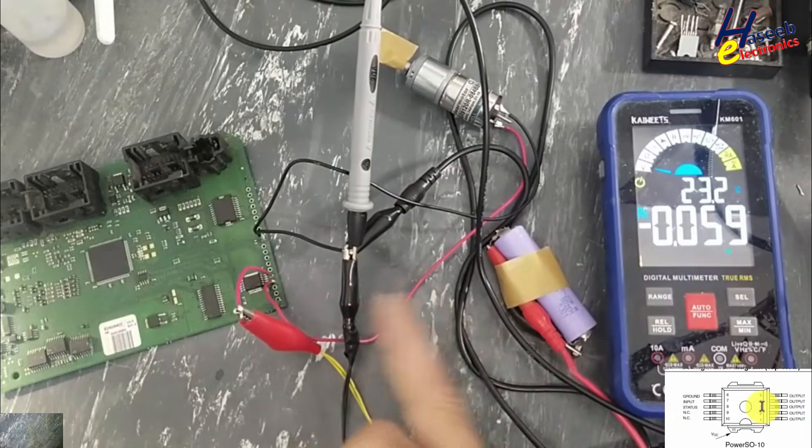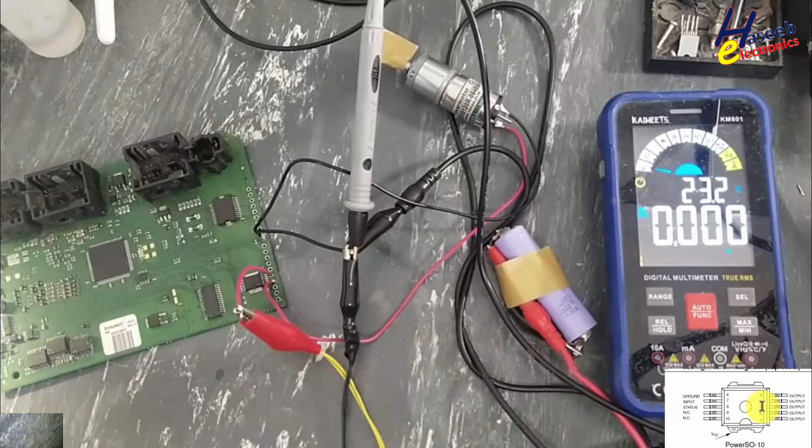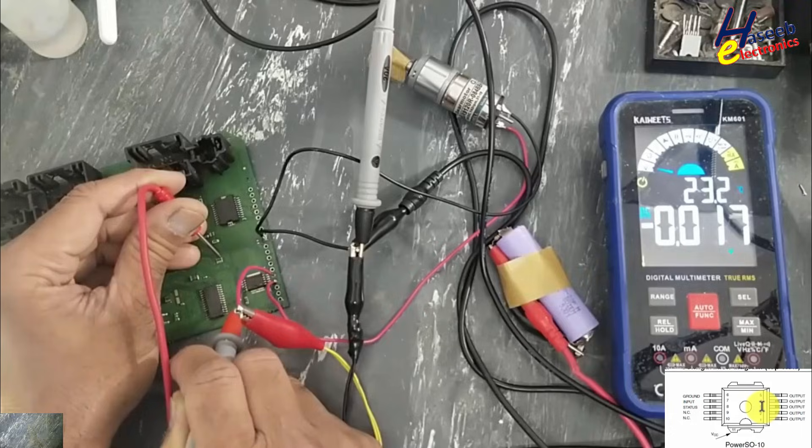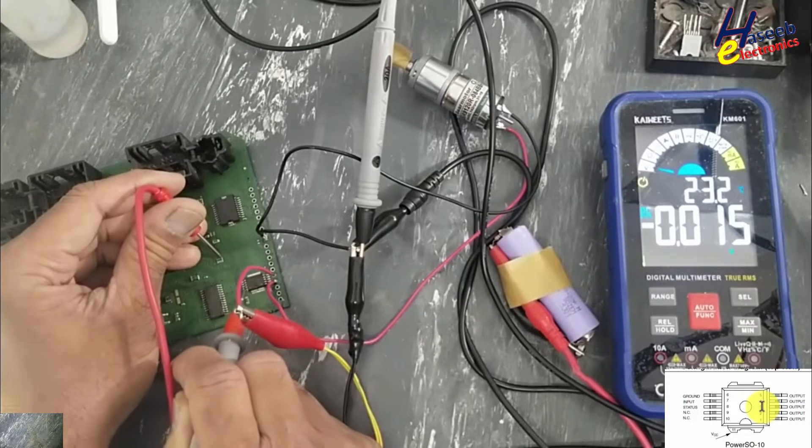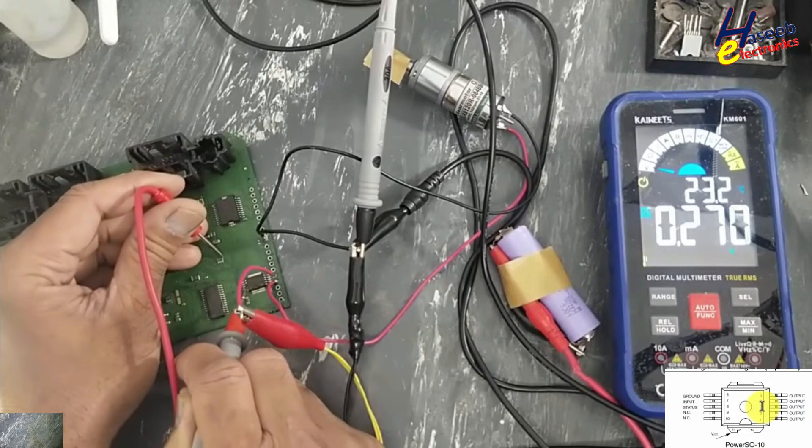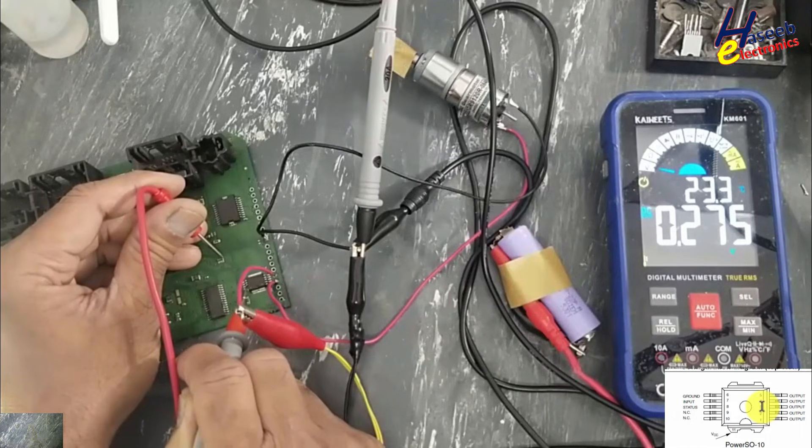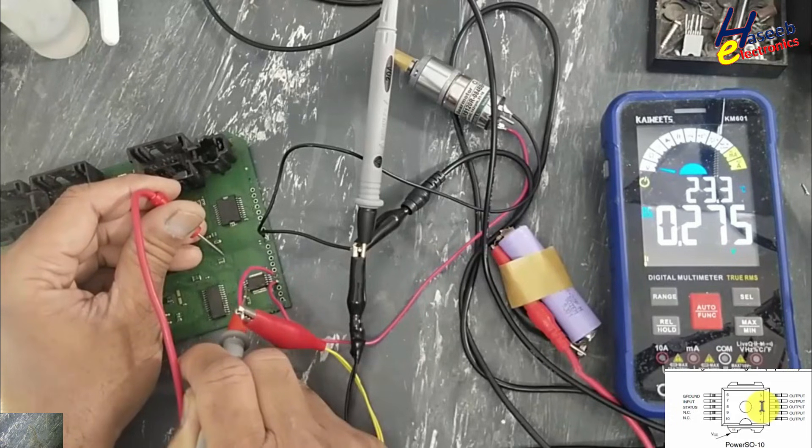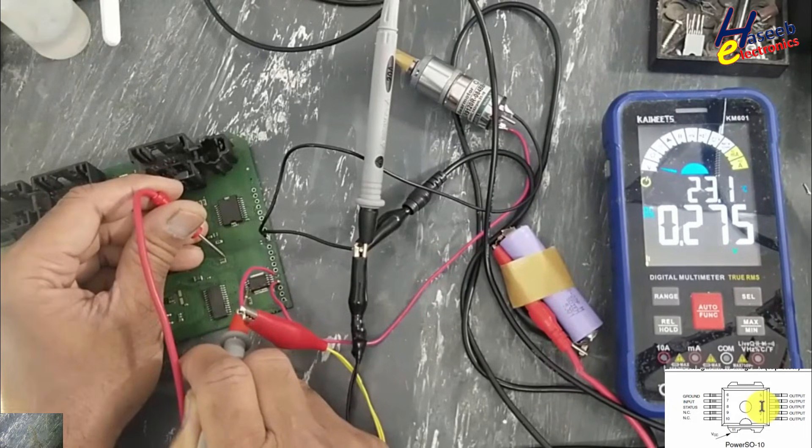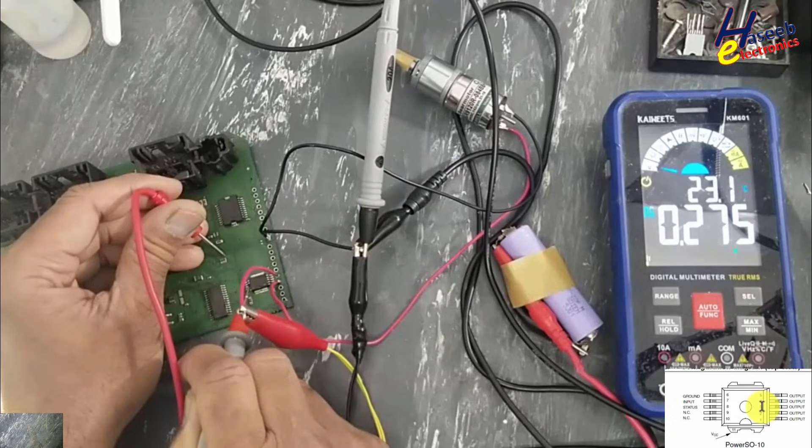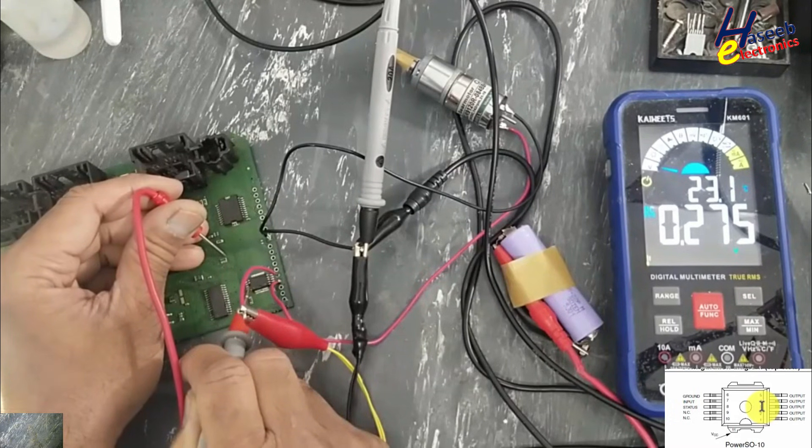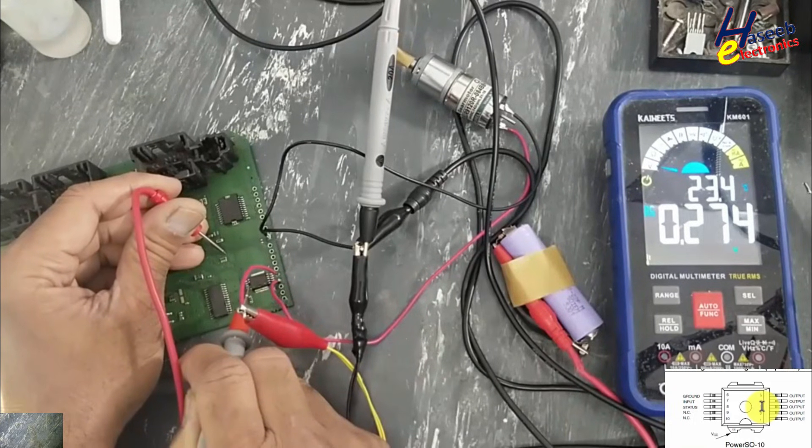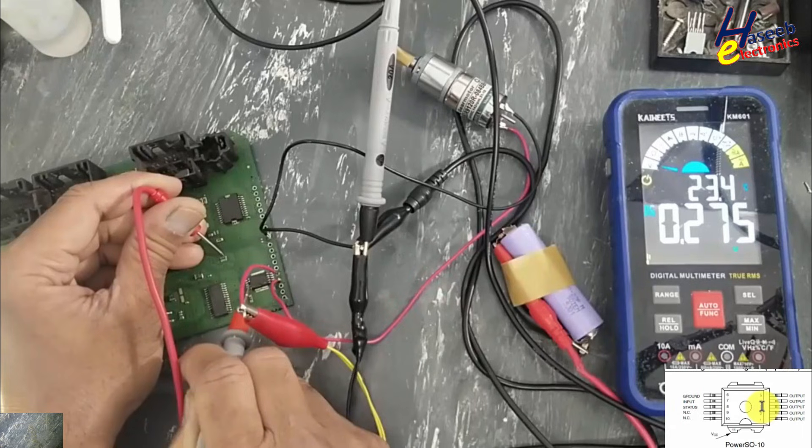Now I connected the common lead of the multimeter to power ground. I will inject signal at pin number 7. When there is no load, it is showing 0.275 volts. As I inject signal, the voltage drops to zero. This is good working condition of this IC.